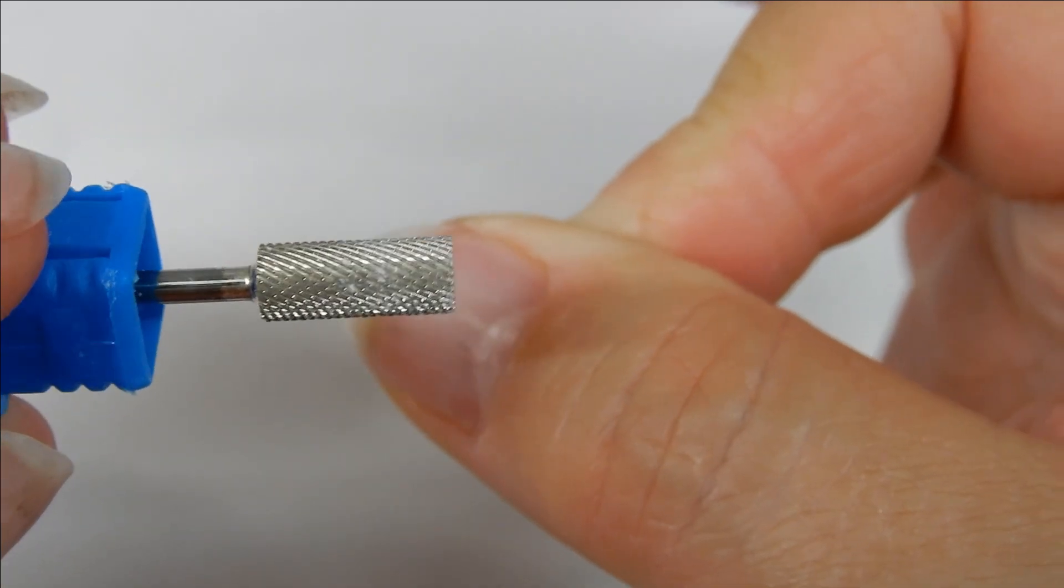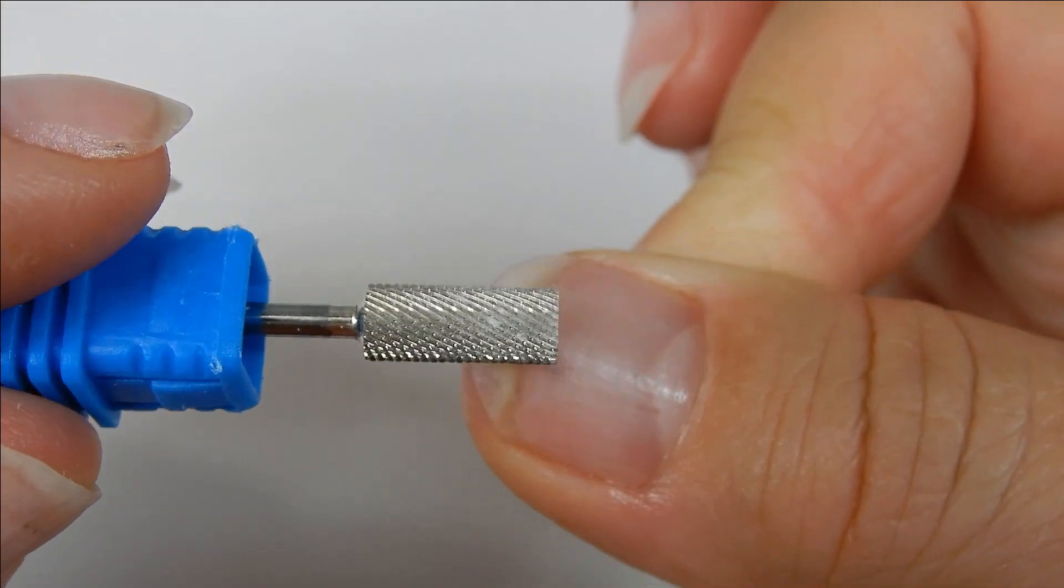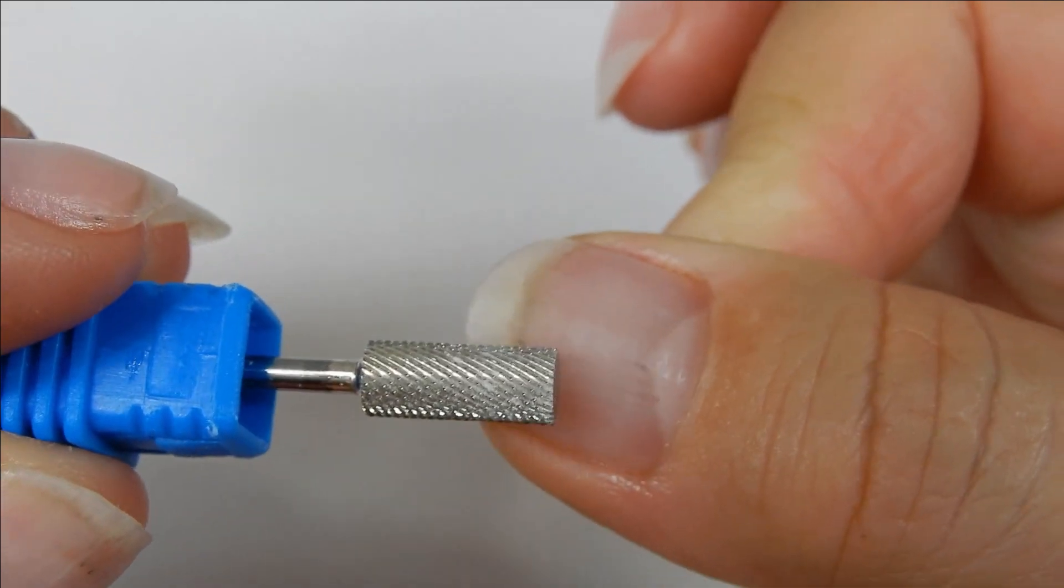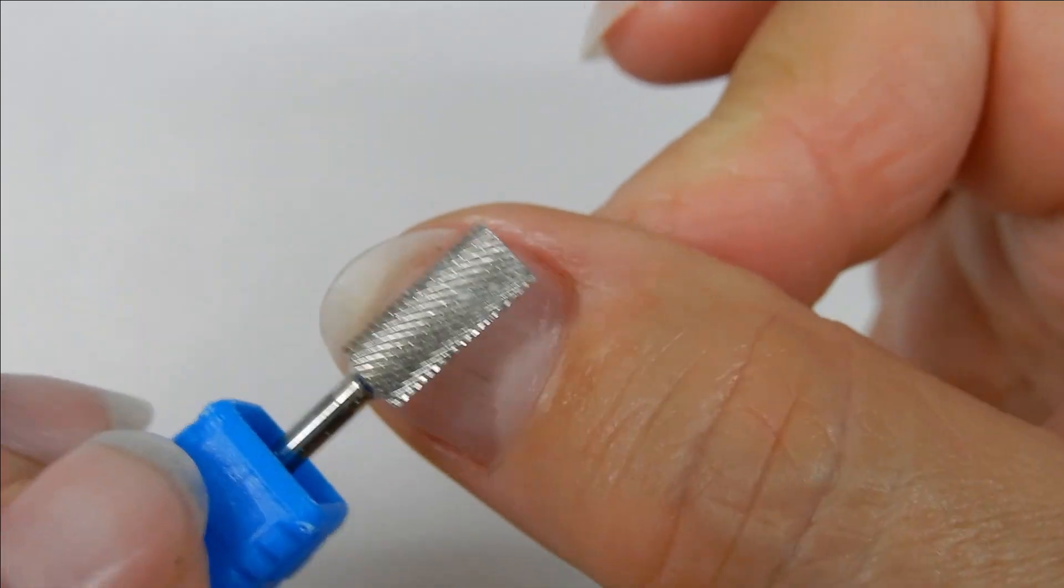And then I will put that one down and grab the extra fine carbide bit and do the rest of the filing. And with the medium and especially the extra fine one here, you're not putting any pressure, okay, at all.